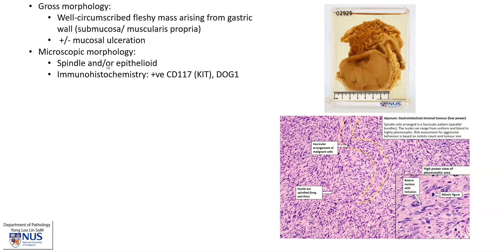Microscopically — and there is a separate video on this — we can see spindle cells, and often these are arranged in parallel fascicles, and sometimes there is nuclear palisading or lining up as well. Some of the GISTs can also have a more epithelioid appearance, so the cells look rounder, and they can also be mixed spindle and epithelioid. Very importantly, they are diagnosed by reactivity with the CD117 immunohistochemical marker, as well as DOG1, and they are negative for muscle markers such as Desmin.